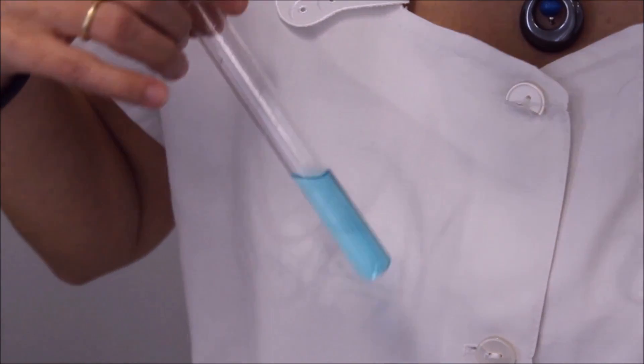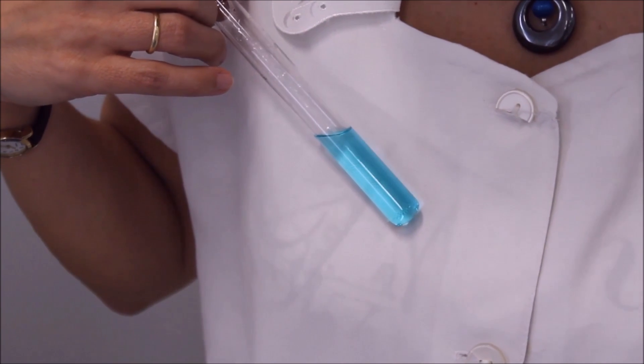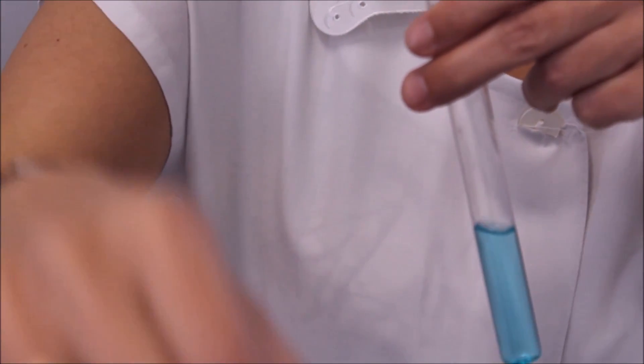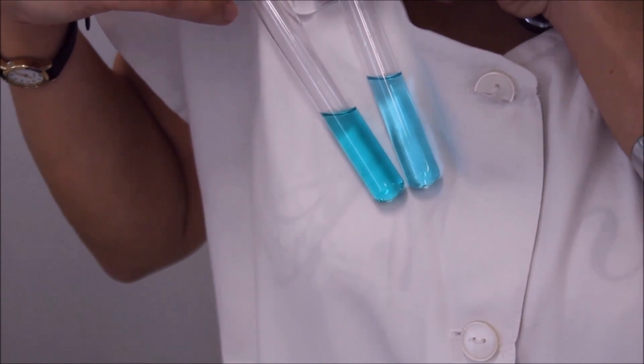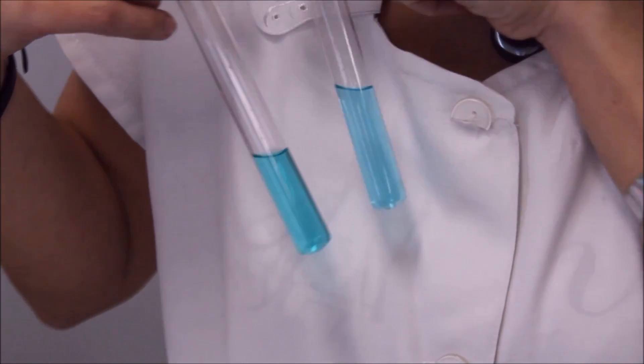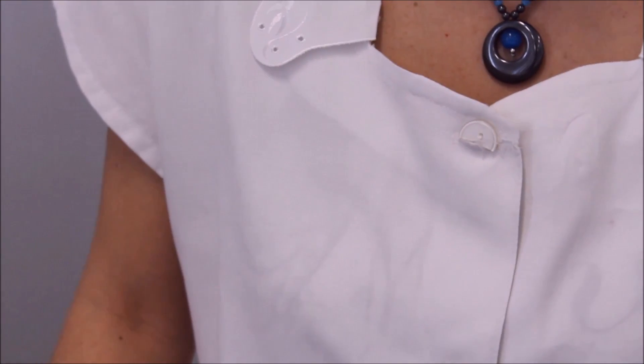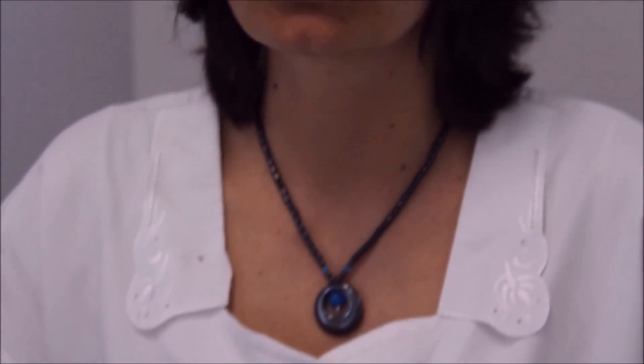A káliumszulfát oldattal megbontott egyensúlyrendszer színe már kékebb. Ennek a magyarázata a következő: a legkisebb kényszer elve értelmében, ha egy dinamikus egyensúlyban lévő rendszert megbontunk, akkor annak a folyamatnak lesz nagyobb a sebessége, amely a zavaró hatást csökkenteni igyekszik. Tehát a káliumszulfát oldat hatására egyre több kékszínű részszulfát keletkezett.